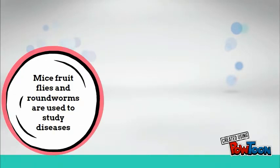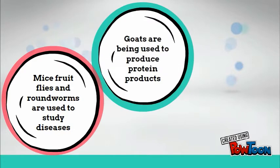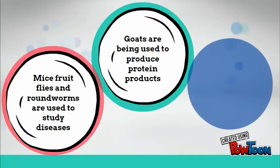To summarize how transgenic animals are used to help humans: mice, fruit flies, and roundworms are used to study human diseases. Dairy-producing animals such as goats are used to produce protein products that include human growth hormones and anti-clotting factors. And finally, pigs are being used as organ donors.